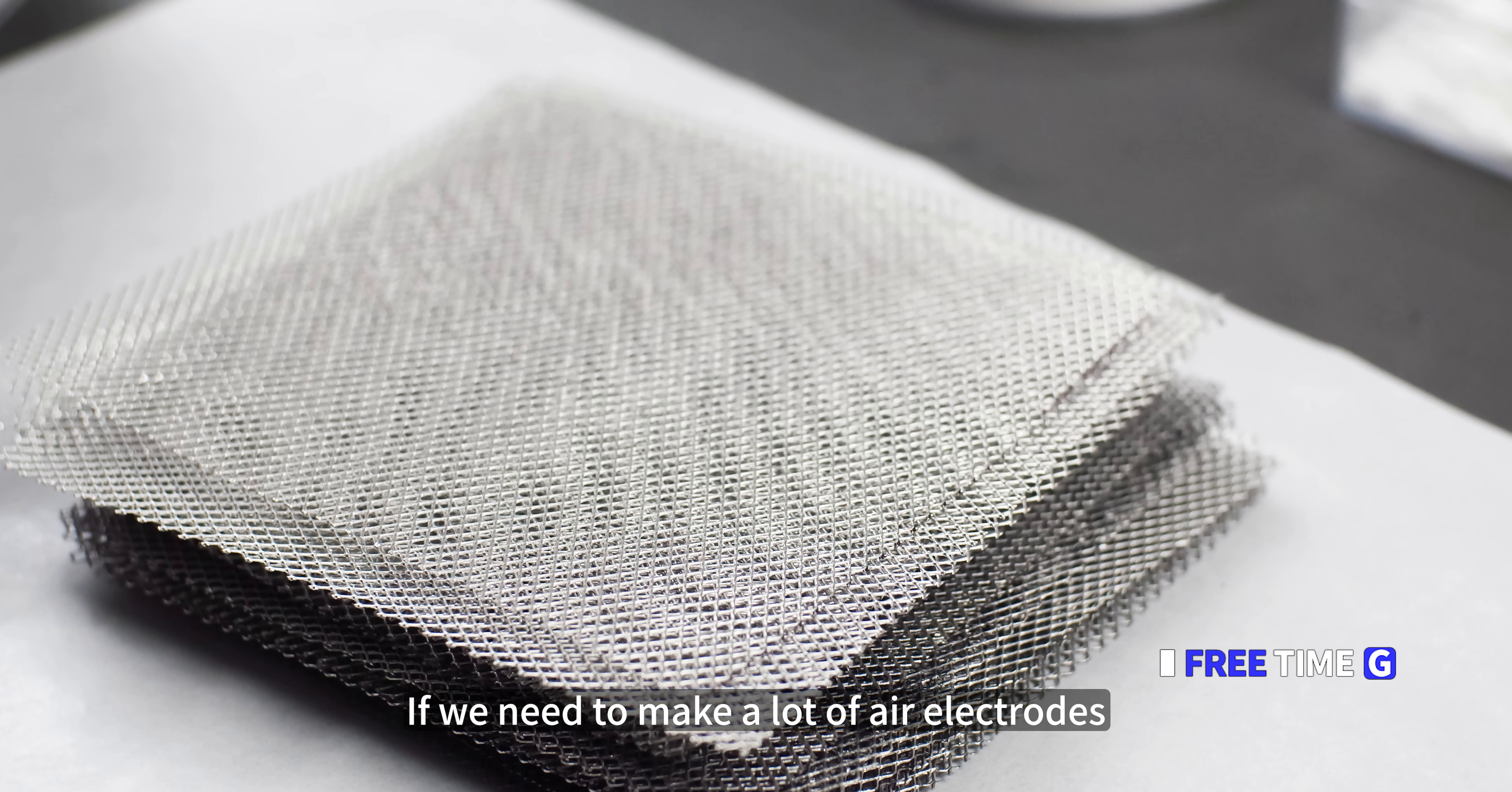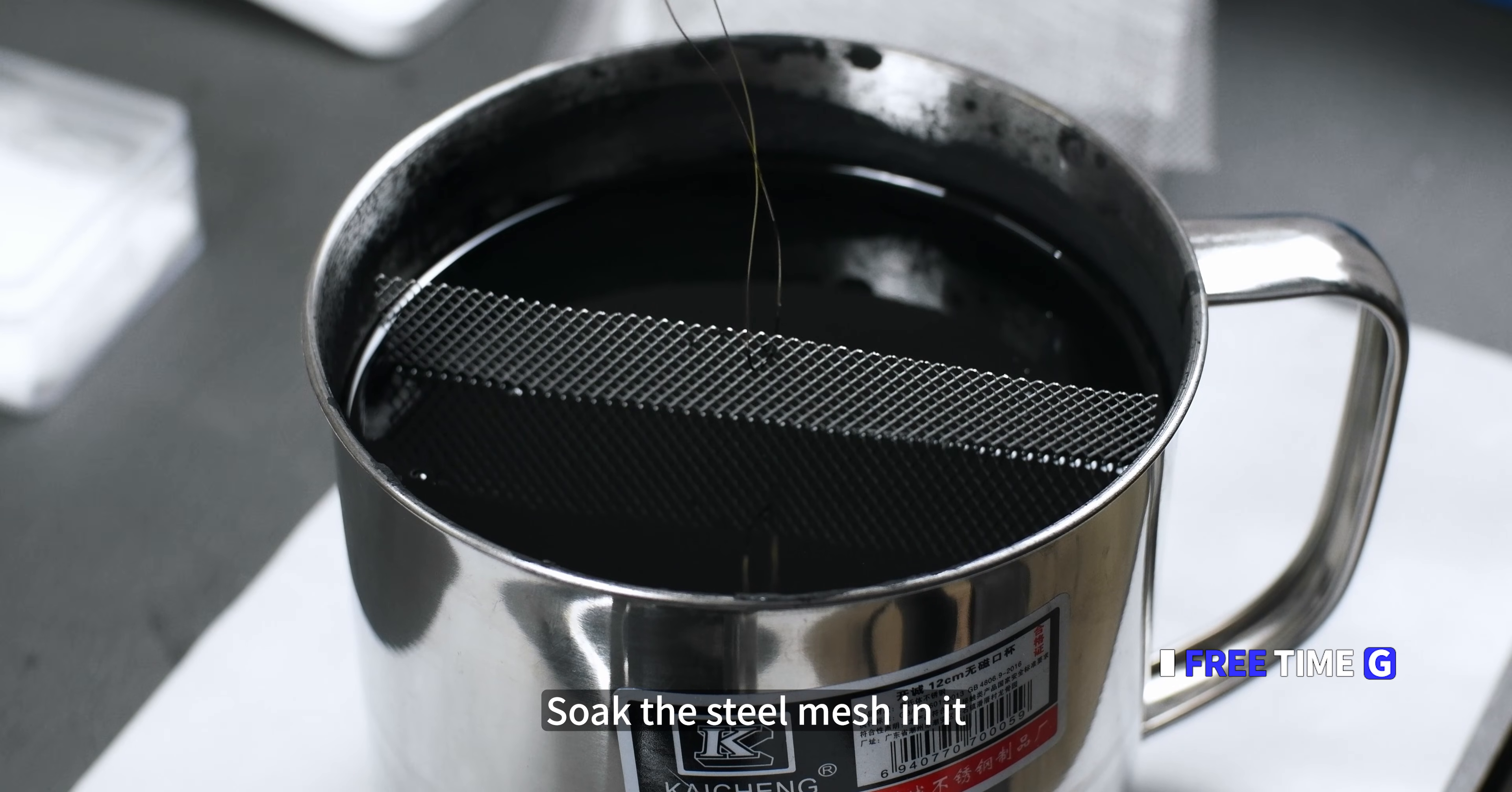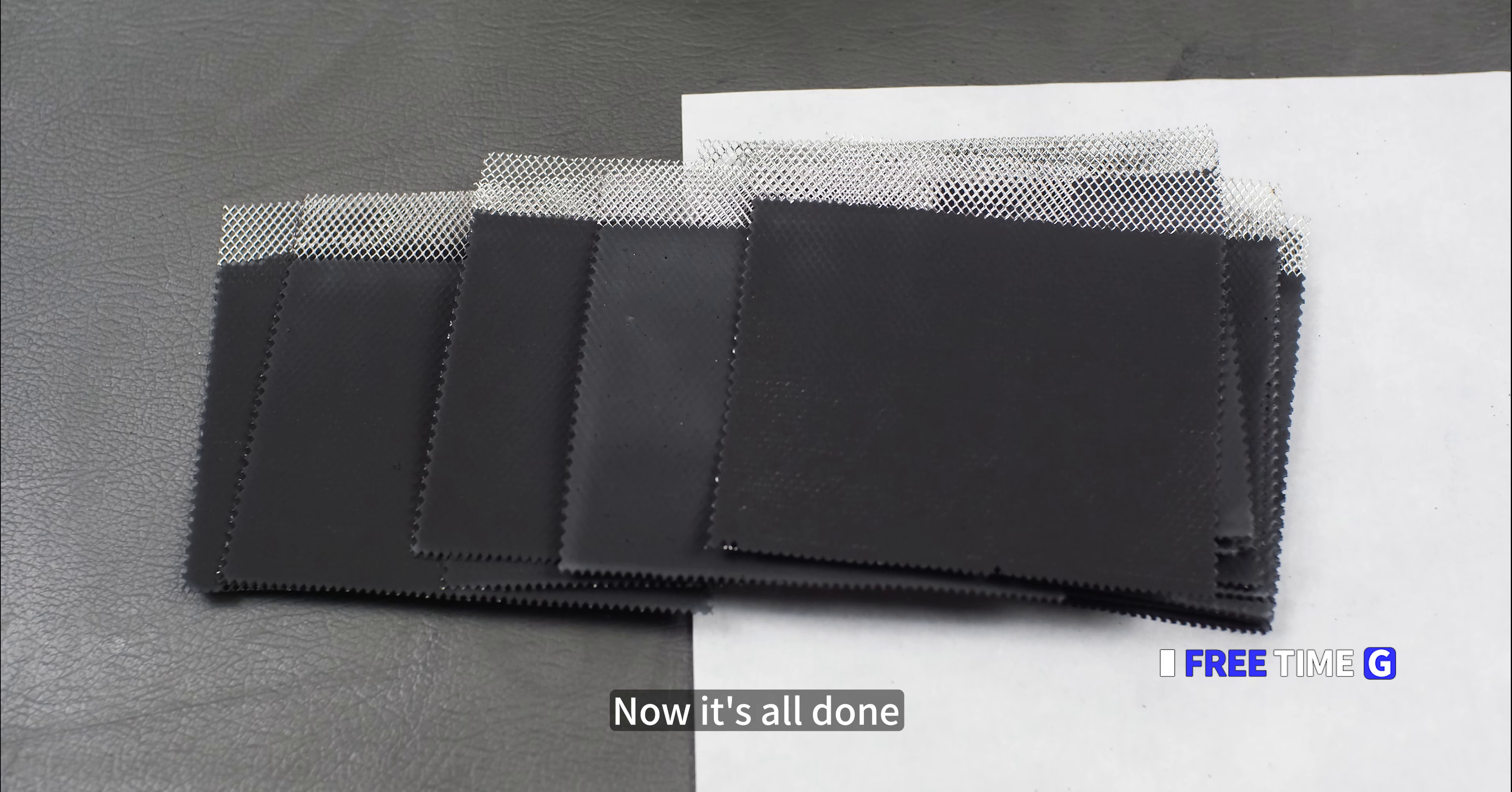If we need to make a lot of air electrodes, this method is obviously tiring, right? We can follow the previous ratio. Prepare activated carbon slurry with appropriate viscosity. It is best to use paint thinner. It is not recommended to use plastic containers for these. This solution may occur. Soak the steel mesh in it, then slowly pull out. Don't go too fast, otherwise it will leave obvious watermarks. The metal mesh is recommended to be smaller. Use metal cloth, such as the electromagnetic shielding cloth, or metal foam is better. Allow to dry for 10 minutes to fully solidify. Now it's all done.